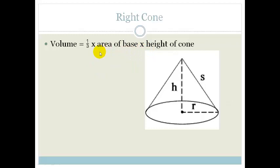Now, the right cone is again, the third times the area of the base times the height of the cone. Isn't that nice? So this time we don't use the slant height, we use this height, we use that height.